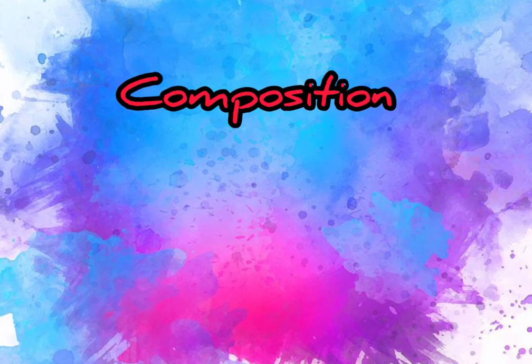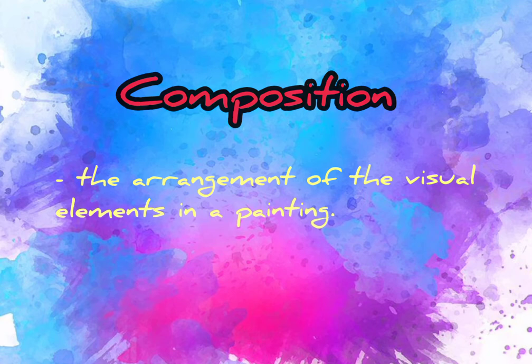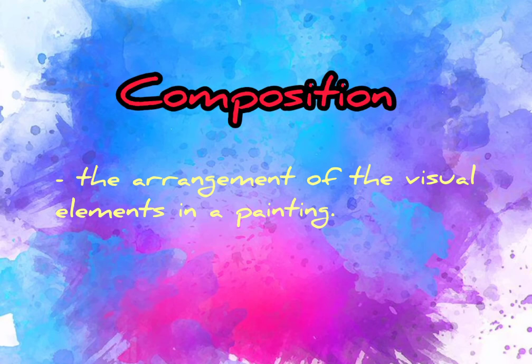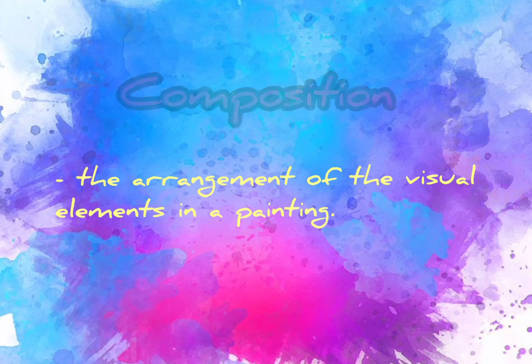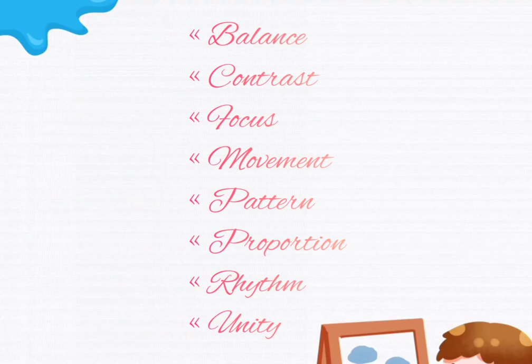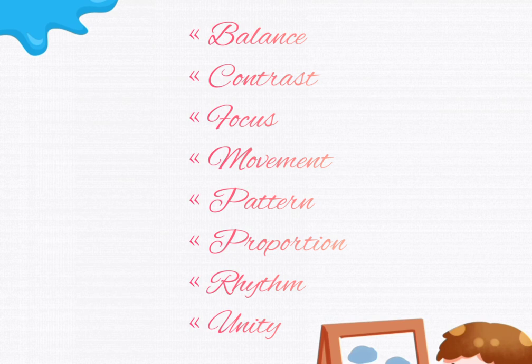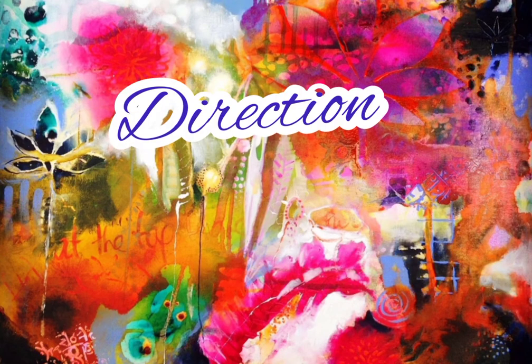The seventh element is composition. Composition is the arrangement of the visual elements in a painting. The eight elements of composition in Western art are: balance, contrast, focus, movement, pattern, proportion, rhythm and unity.